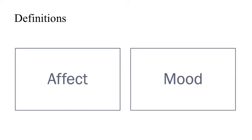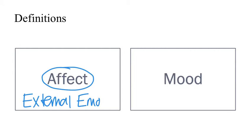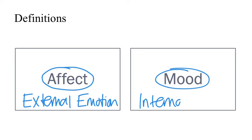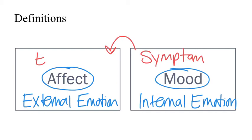Major depressive disorder is considered an affective disorder because it affects what is known as affect, which is defined as the external expression of emotional content. Mood, on the other hand, is the internal emotional state of an individual. Mood is a symptom, whereas affect is the way that the disease or disorder is expressed externally.